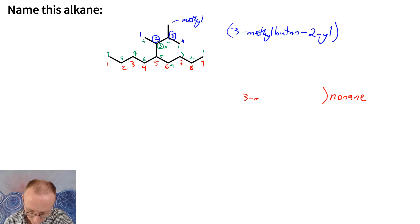So it's a 3-methylbutan-2-yl and then that is located at this five position along the chain. So it's a 5-(3-methylbutan-2-yl)nonane. Quite a mouthful but that is the correct IUPAC name for this alkane.